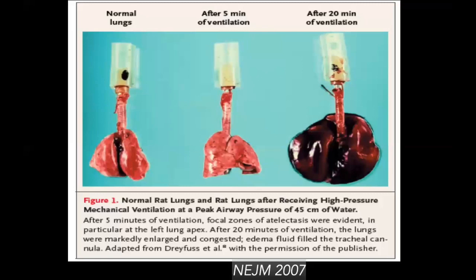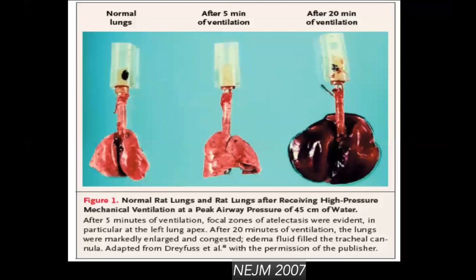These are rat lungs exposed to high airway pressures for just 20 minutes. The lungs turn into very solid, liver-like structures that are not functional at all and not taking part in gaseous exchange. These are the macroscopic features one would find in lungs exposed to harmful ventilation.